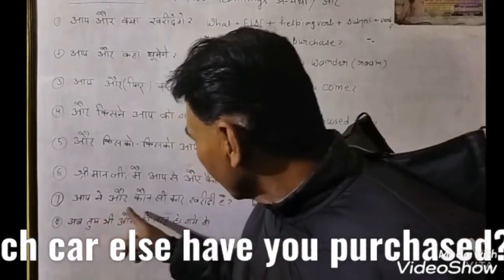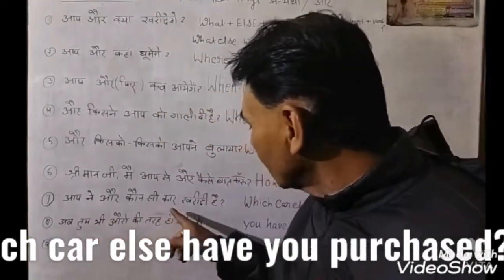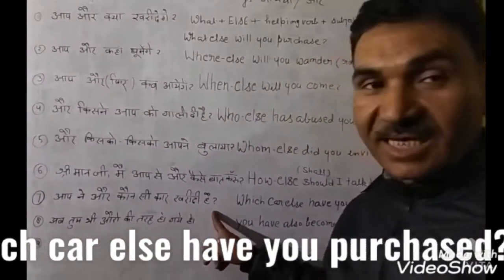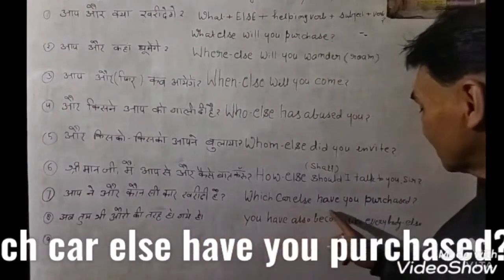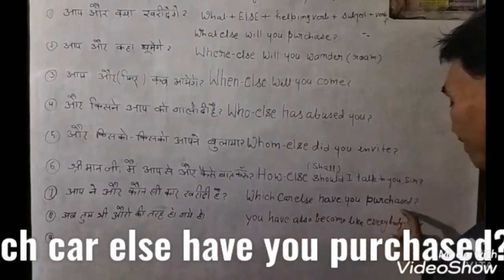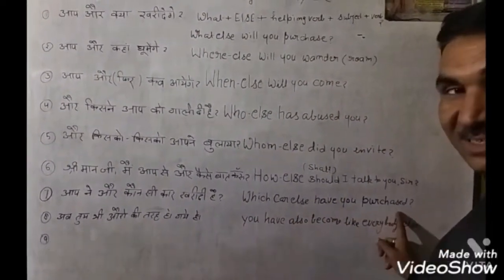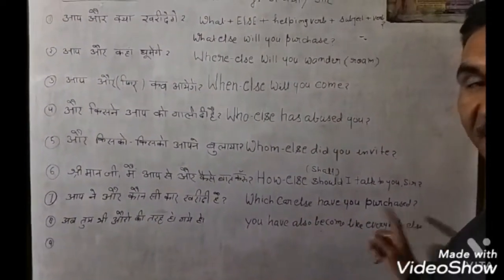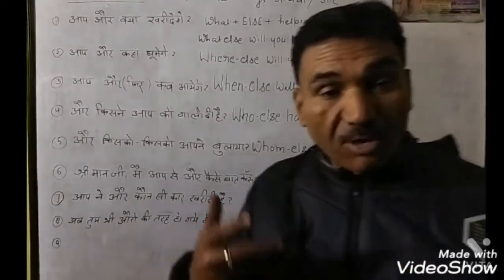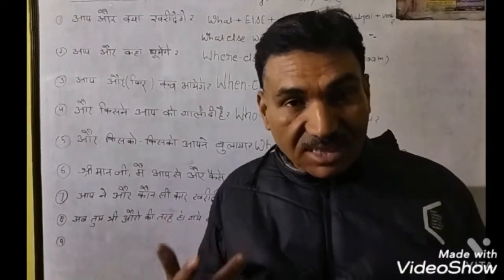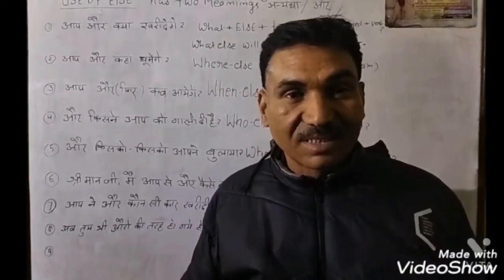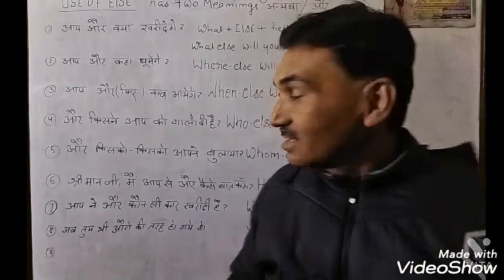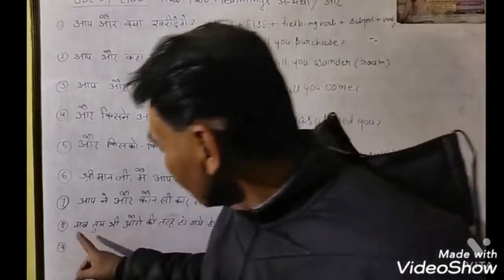आपने और कौन सी कार खरीदी है? — 'Which car else have you purchased?' इस type के sentences आपको बहुत सारी practice करनी है। ये बोल चले हैं — बहुत सारे sentences आते हैं। Right.